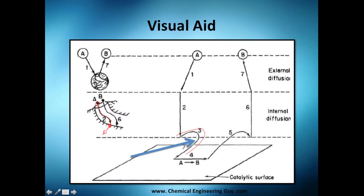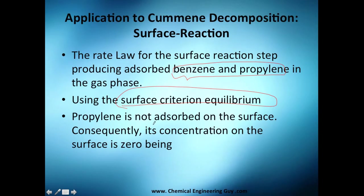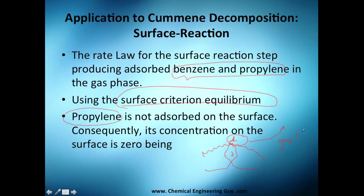Now let's analyze the surface reaction — the rate law for step 4 producing adsorbed benzene and propylene. Propylene is in gas phase so you need to use partial pressure. Very important: propylene is never adsorbed on the surface. What propylene does is break free as gas, which is why we use partial pressure for it, while benzene stays as concentration on the active site.